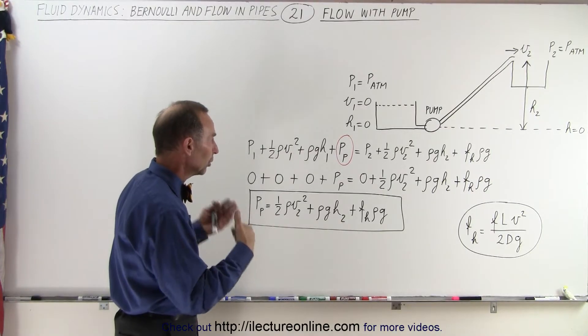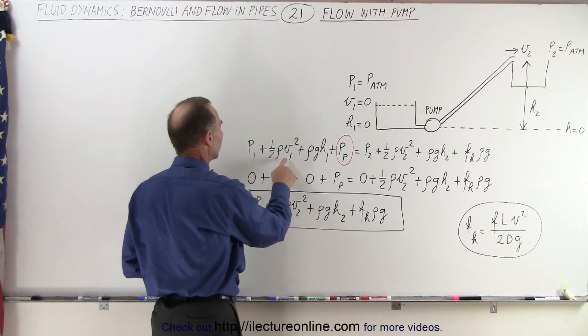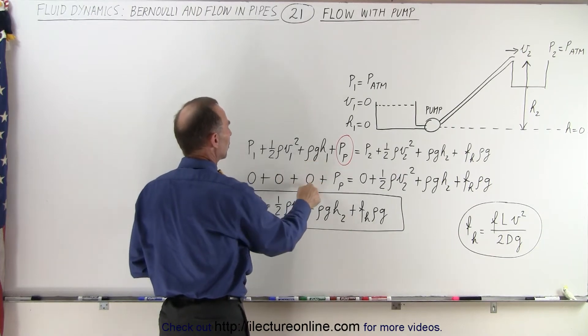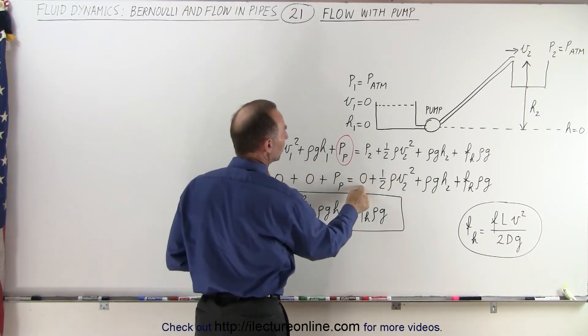So when we put all the knowns in there, p1 will be zero, v1 will be zero, h1 will be zero, and p2 will be zero.